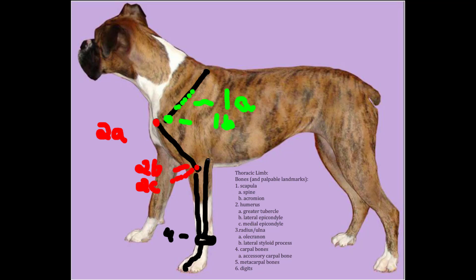For the ulna, we'll outline the olecranon tuber on the proximal caudal part of the ulna — that's 3a. We'll also outline the distal lateral styloid process for the ulna and label that 3b.